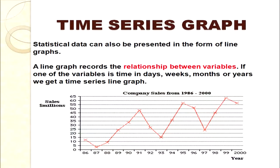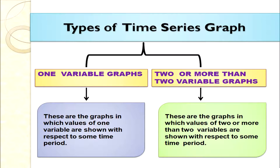We have learned how to draw a pie diagram. Now we discuss time series graphs. Time series graphs are also known as line graphs because they record the relationship between variables, one of which is time — it could be in days, weeks, months, or years. There are two types: one-variable graphs and two-or-more-variable graphs.